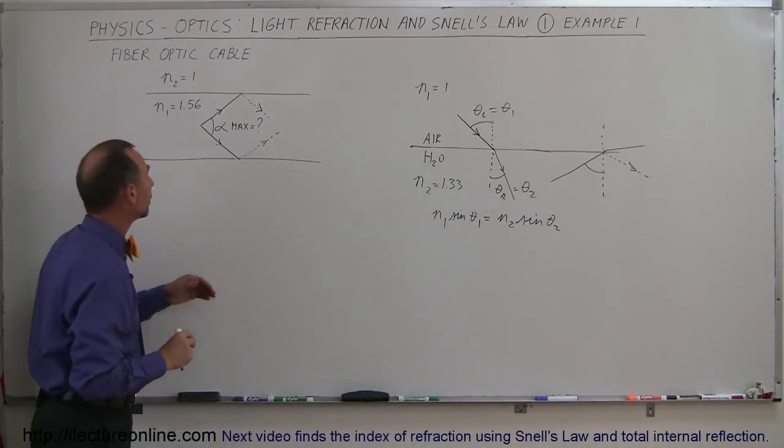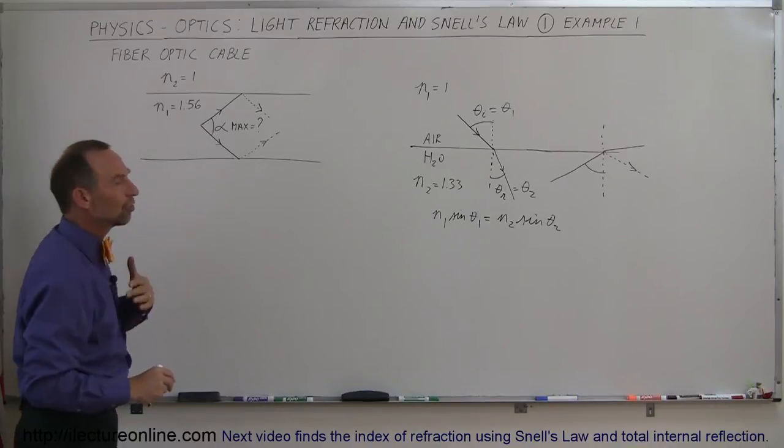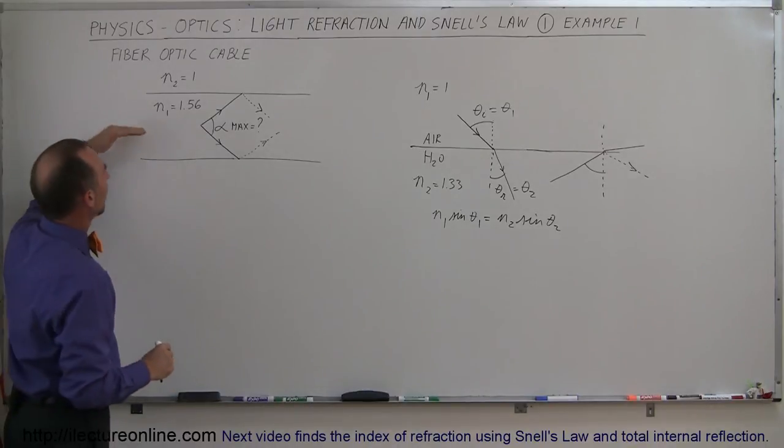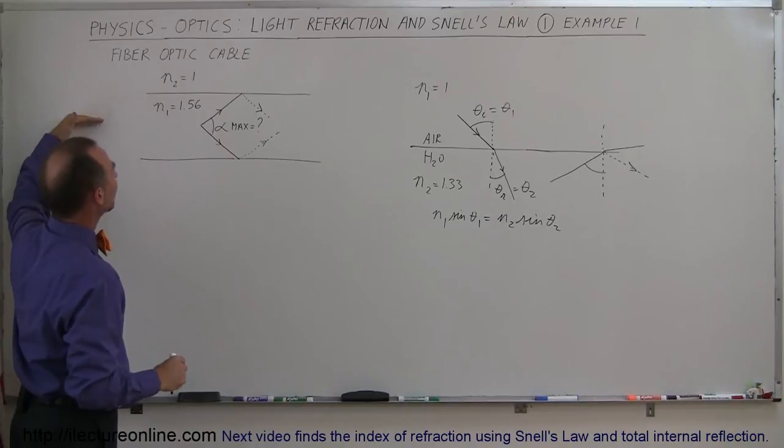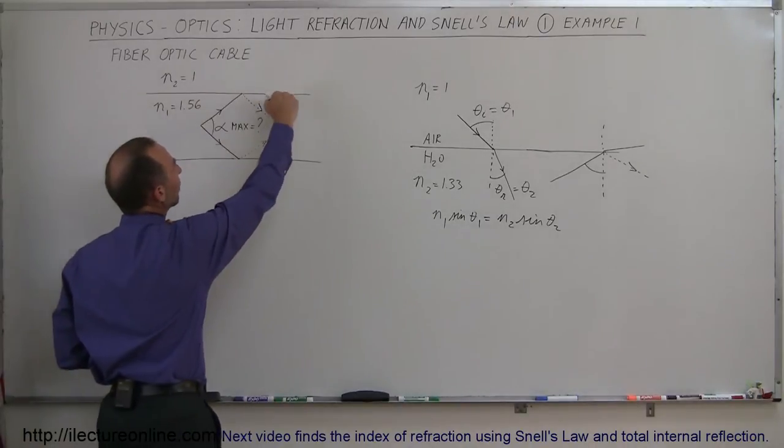That's the principle that we experience in what we call a fiber optic cable. A fiber optic cable, which is made out of a type of glass, will allow beams of light to travel through the cable, without actually leaving the cable, even if the cable is bent.